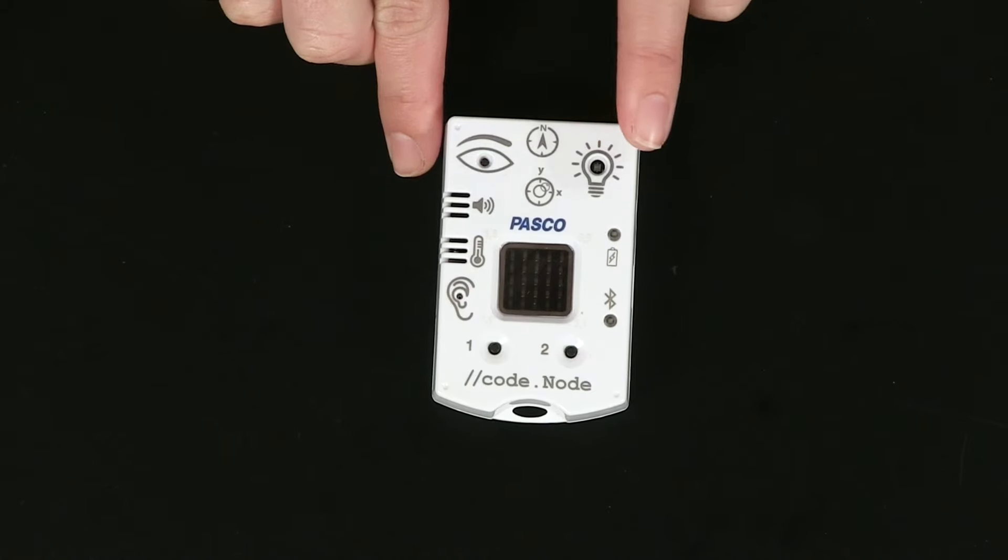Okay, so we talked about RGB LED and monitors. Your RGB LED on your code node, right over here, has a red, green, and blue light. You can mix the brightness of each of these from zero to ten. And when you adjust that brightness, you can actually get different colors.